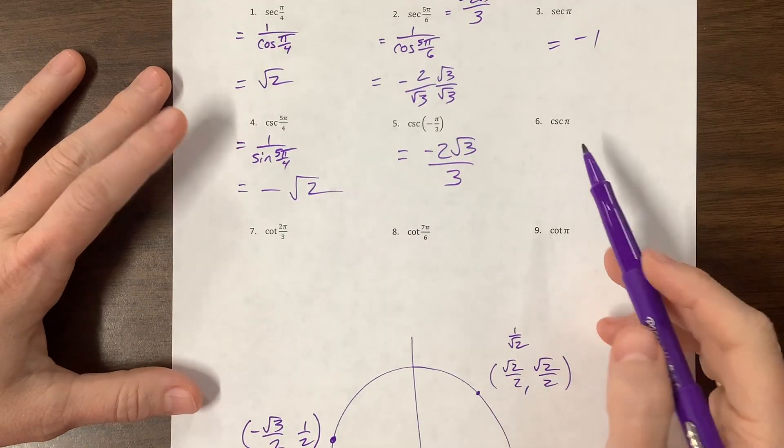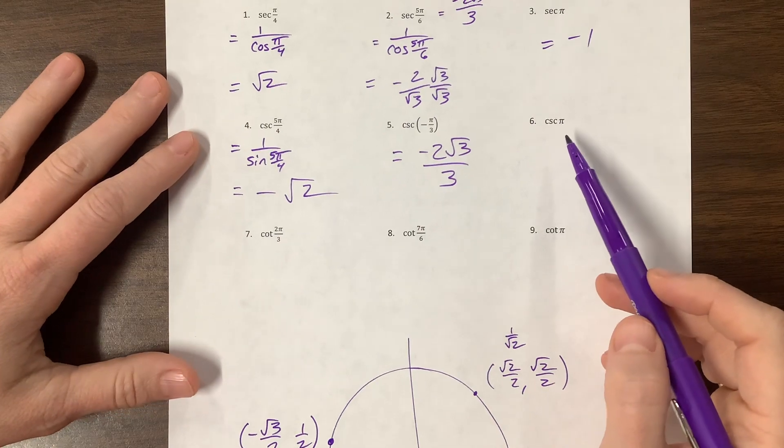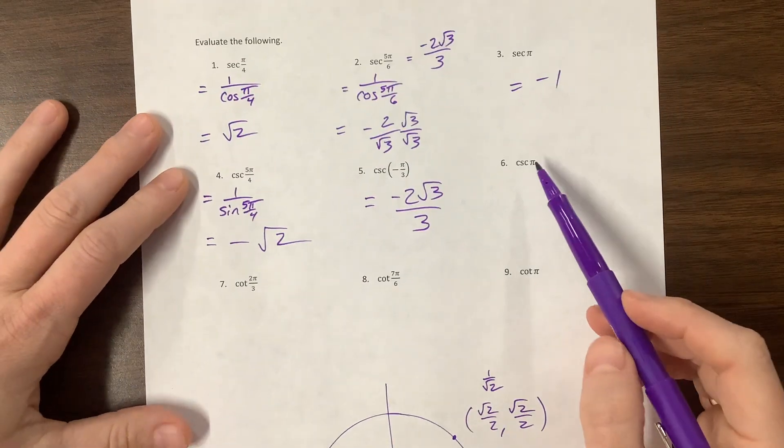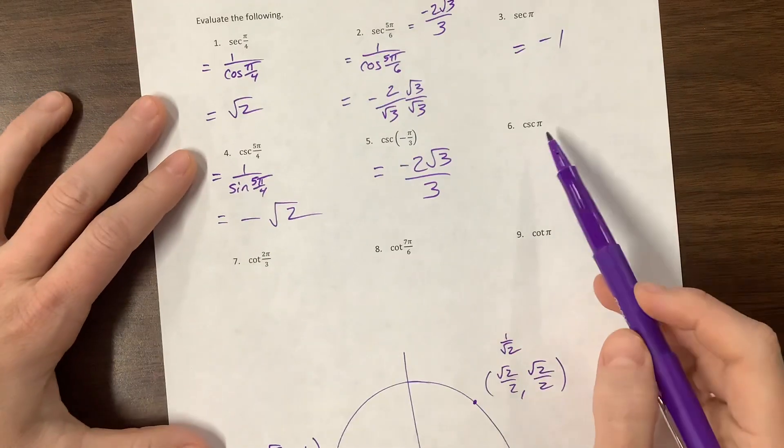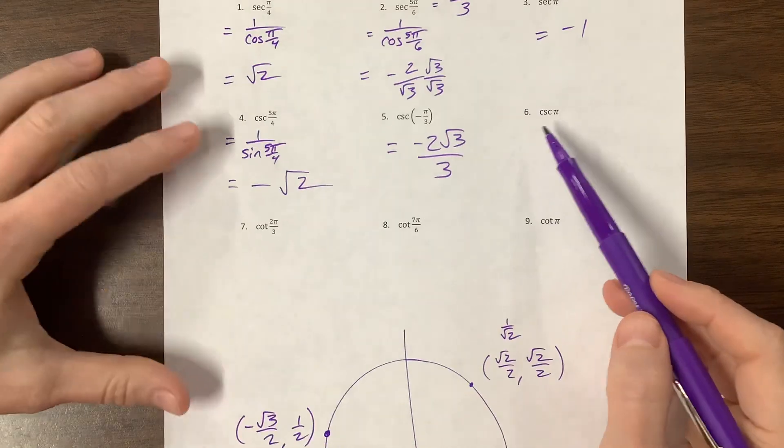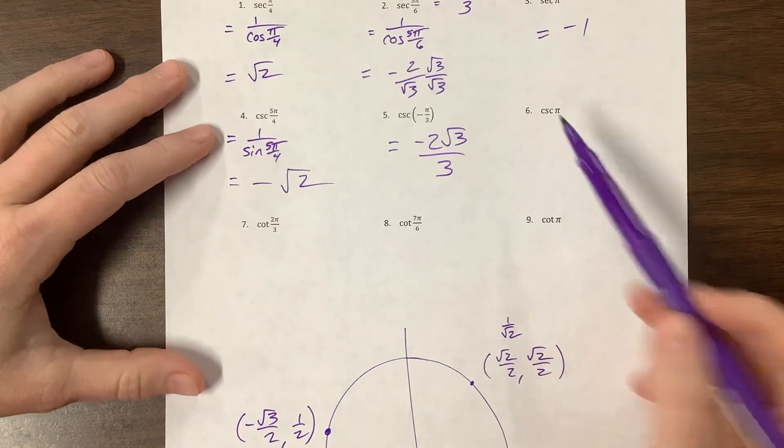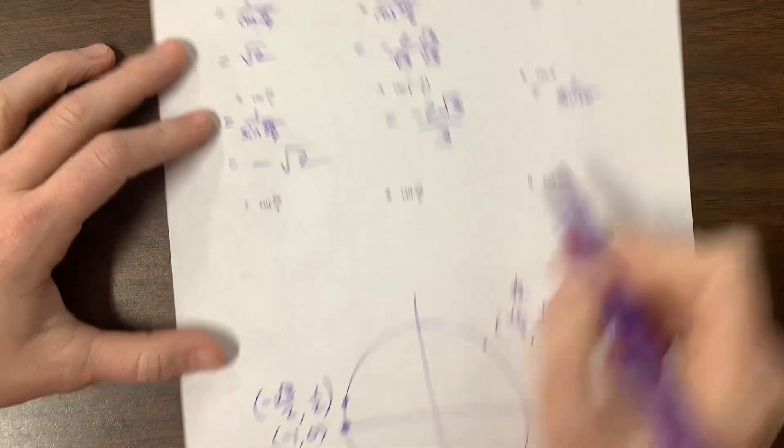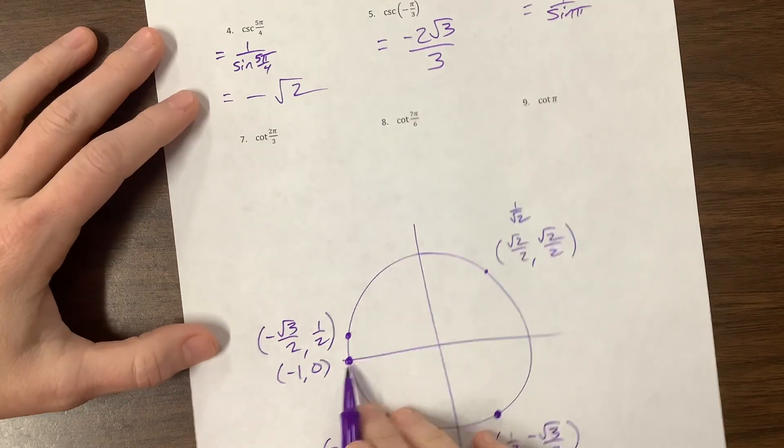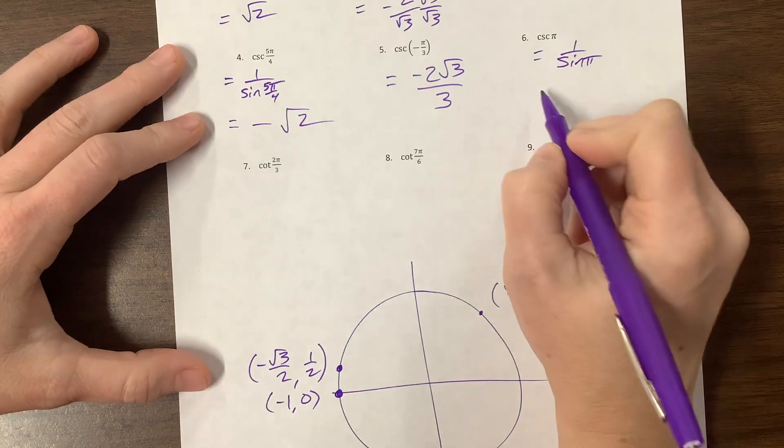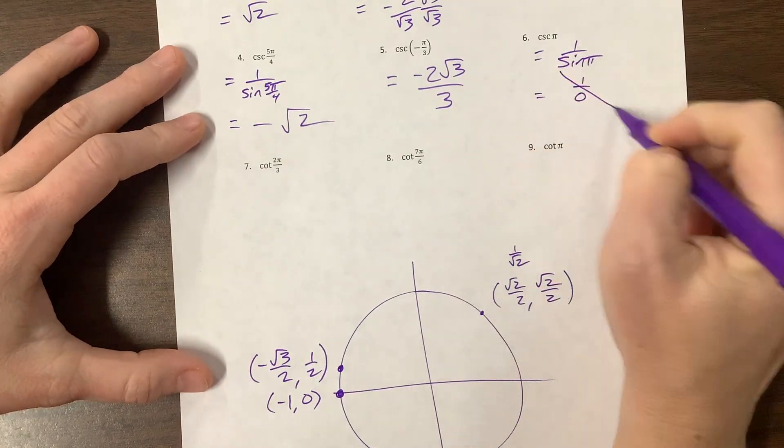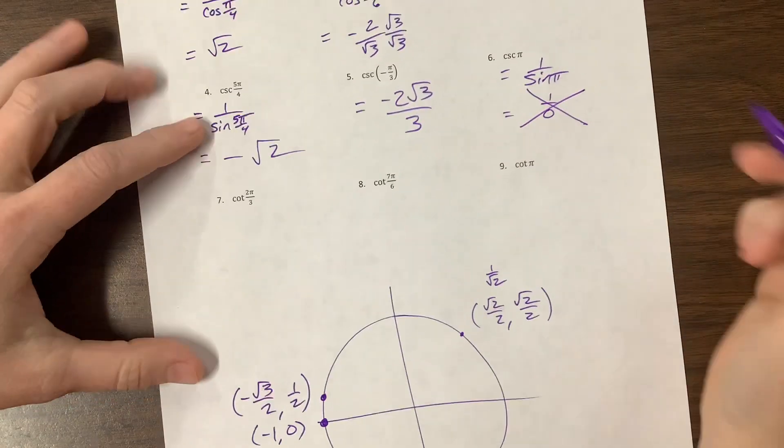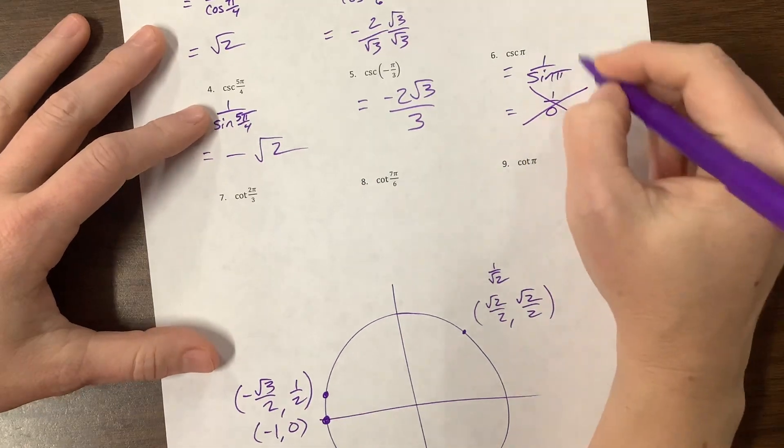Okay, cosecant of, did I forget to change this? I don't know, maybe I, no, I think I forgot to change it. Oh, well, whatever. Cosecant of pi. Oh, this is actually good that we're doing this. Okay, cosecant is 1 over sine of pi. And sine of pi over here is, the sine is the y, that's 0. Well, you are not Chuck Norris. You cannot divide by 0. And so cosecant of pi is undefined.